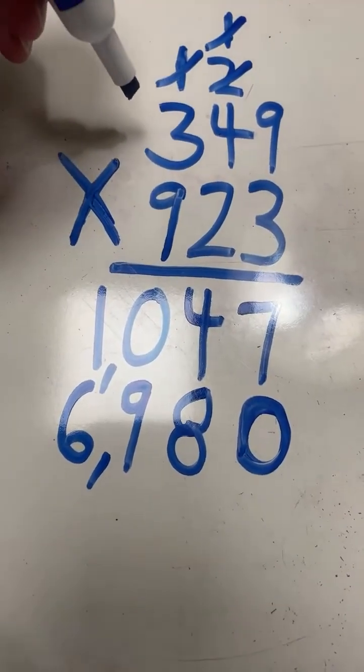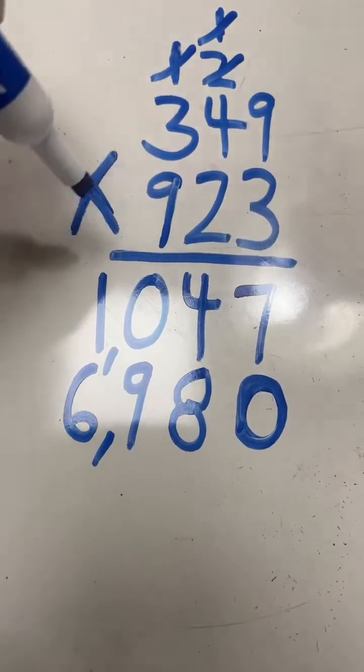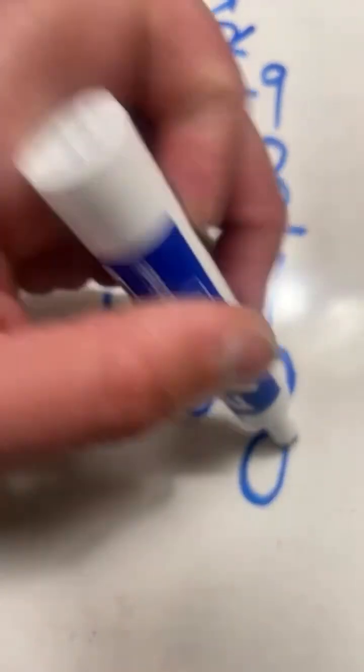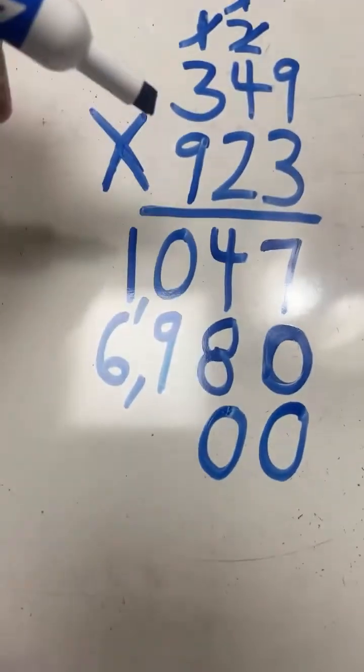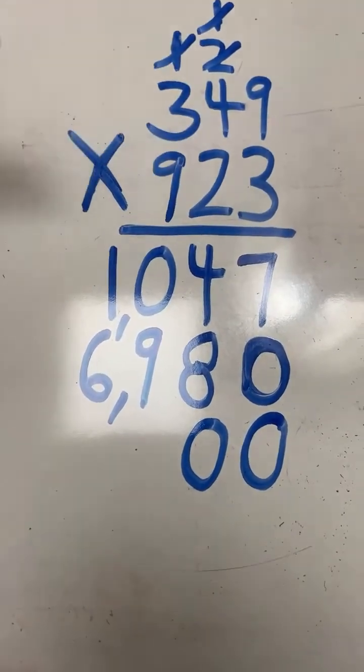Now before we multiply the top 3 digits times the bottom digit in the hundreds place, we have to put a 0 in the ones place and a 0 in the tens place, because both digits in the ones and tens place have been multiplied.